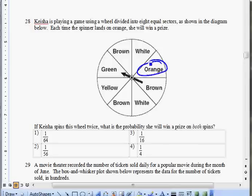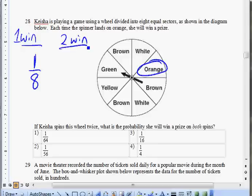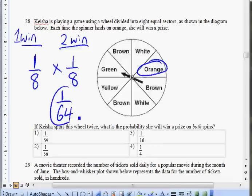The second spin, the chance of her winning or getting an orange on the second spin is also 1 out of 8. If she wants to win both times, you just need to multiply these two fractions: 1/8 times 1/8, and that is 1 out of 64. That's her chance of winning twice in a row. Choice one.